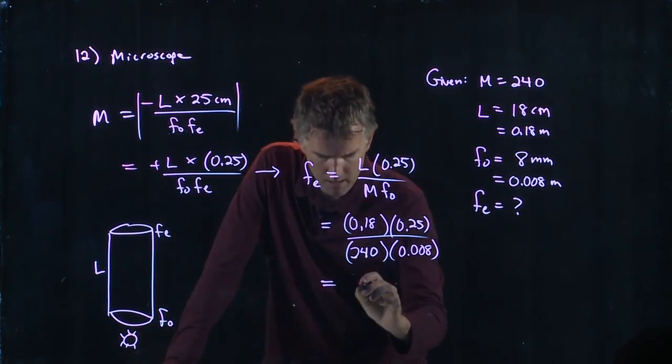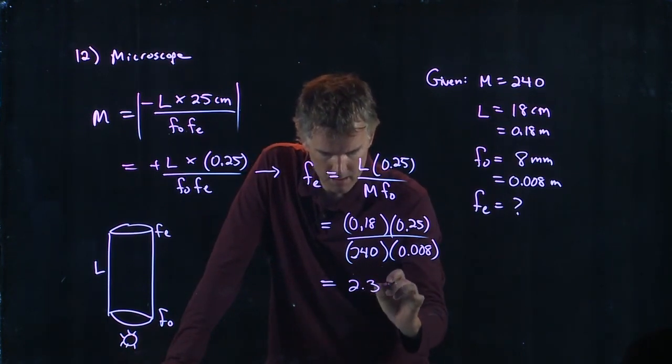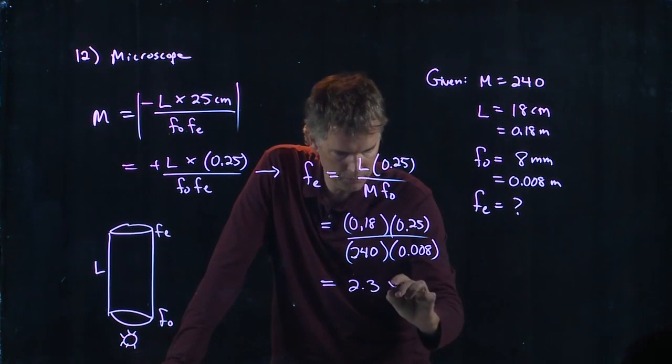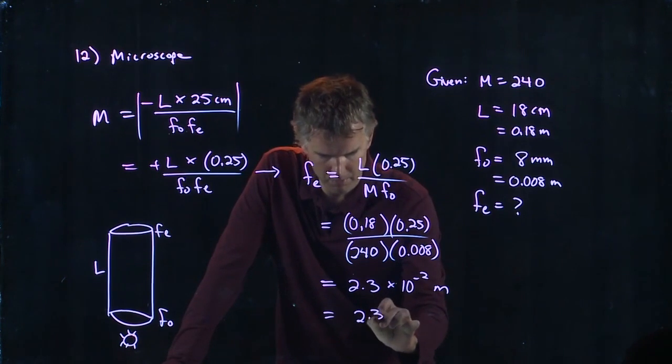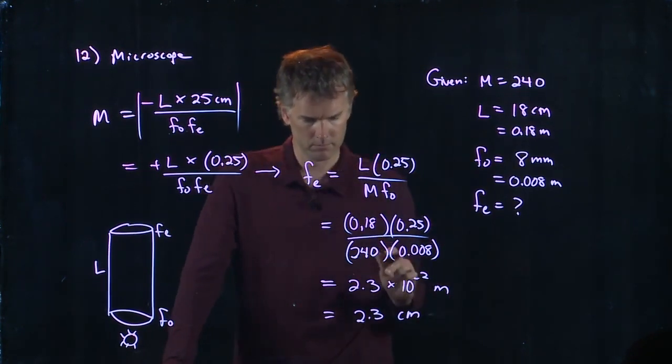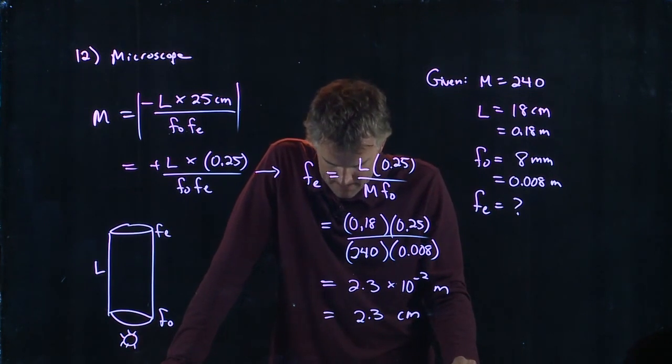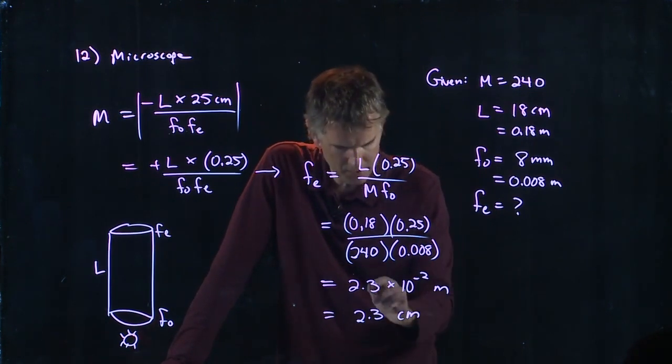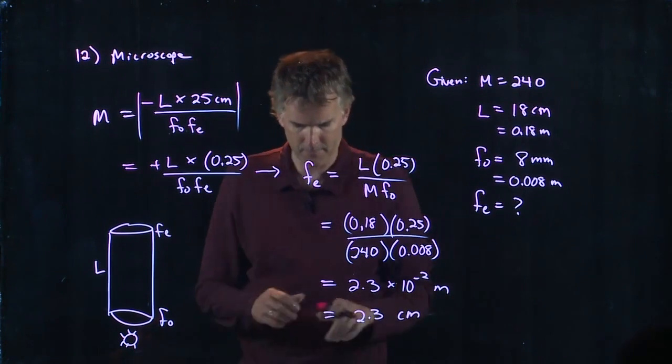What'd you get? 2.3? 2.3 times 10 to the minus 2 meters, which is 2.3 centimeters. And that is, in fact, one of the answers. Did anybody else get 2.3? Do we have verification on that? Good.